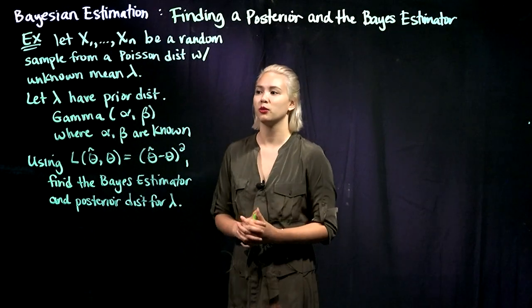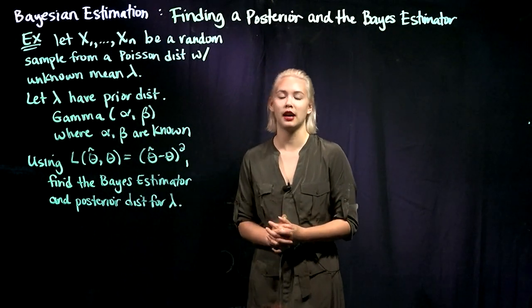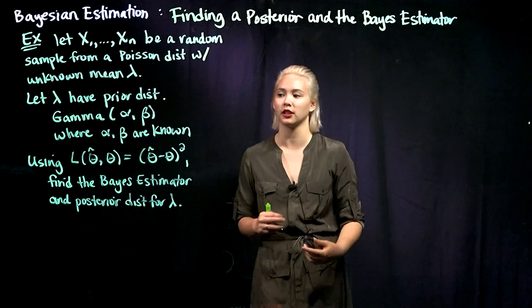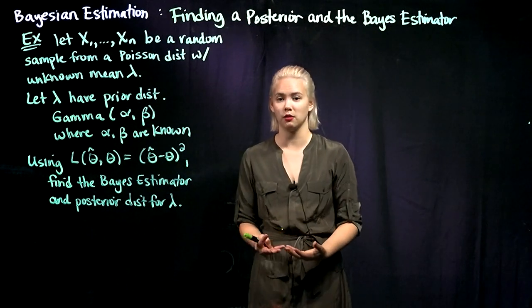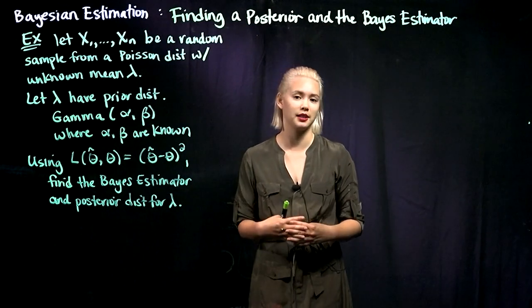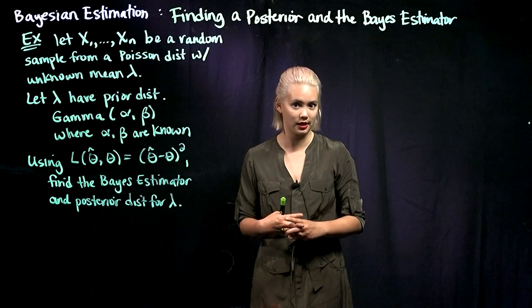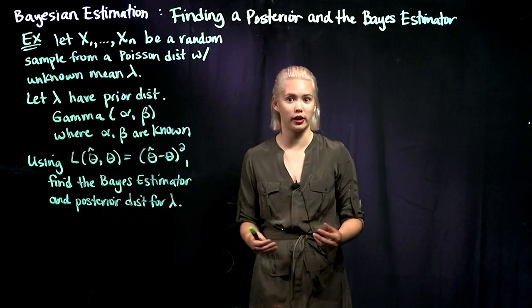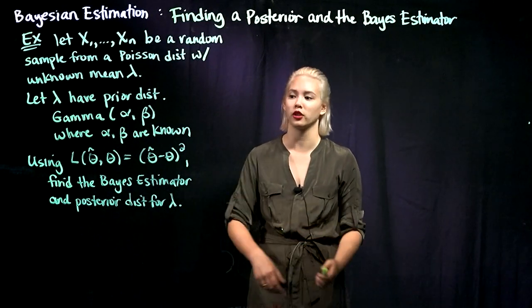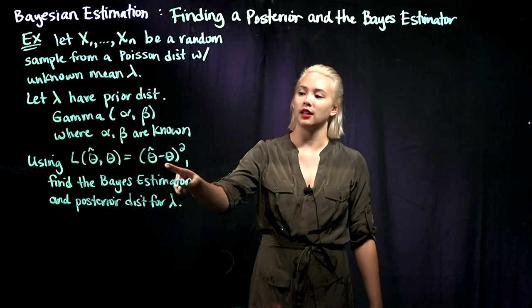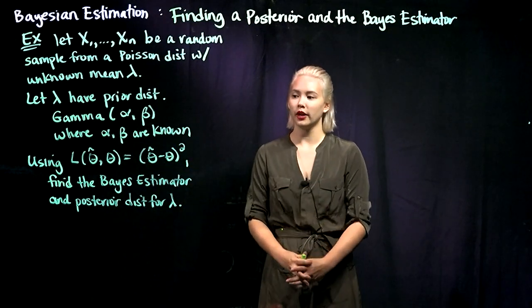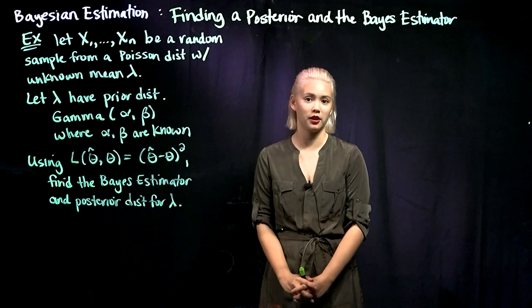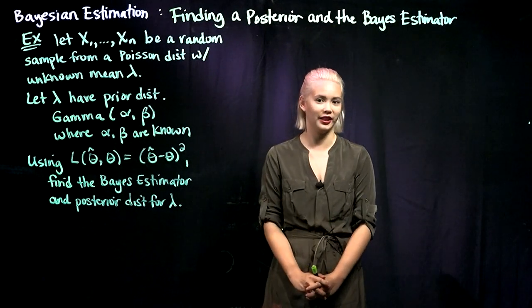Let's choose lambda to have a gamma distribution with parameters alpha and beta, and alpha and beta are known — we chose them. It could be something like alpha equals 2, beta equals 7. So we have our prior distribution, and the last thing we need for the Bayes estimator is our loss function, because the Bayes estimator minimizes the expected loss. Let's choose the squared error loss, which is theta-hat minus theta, squared.